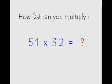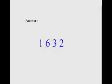How fast can you multiply 51 with 32? I'm giving you five seconds — your time starts now. The correct answer is 1632. Now let's quickly see the usual way of doing it.